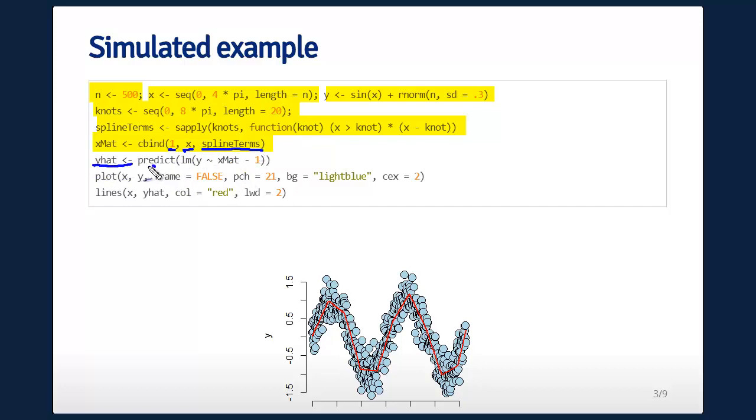My y hat is just going to be, if I predict my fitted linear model with y as an outcome, and this is my x matrix. I'm subtracting the intercept because I put an intercept in my matrix. Now I'm just going to plot my x and y. These are the points, and then I'm going to show the fitted model. And what you see, pretty neat, is that it fits these little sticks. You can see the little breaks in the lines, and it fits the data pretty well. It fits a pretty complicated function.